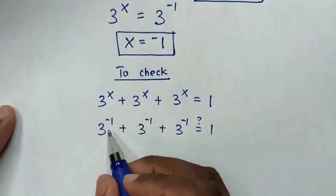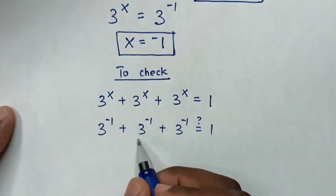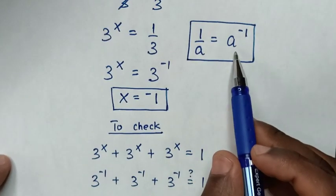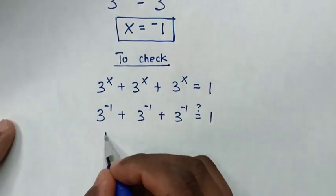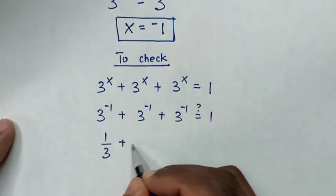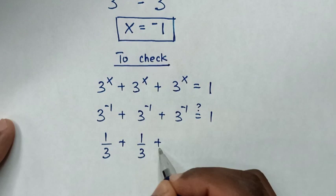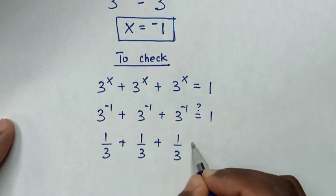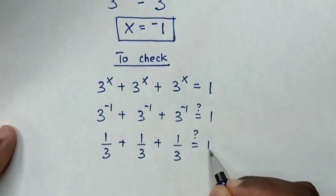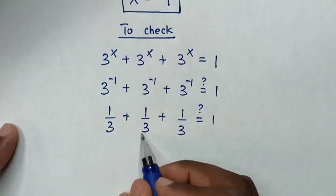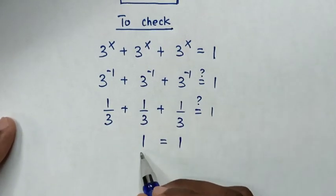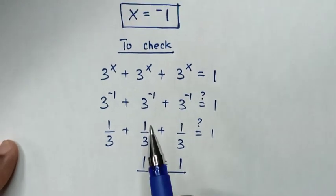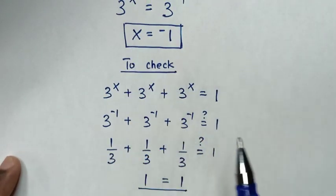Then from 3^(-1), same as here and here, we'll apply this exponential rule into fraction. So in here, it's the same as 1/3 + 1/3 + 1/3 = 1. Then, the sum of three 1/3s is a whole, which is 1 = 1. Therefore, left side and right side are equal, so it's true that the value of x is equal to -1.